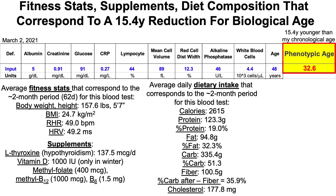The average daily dietary intake for the two-month period from my last blood test until this one: my average calorie intake was 2,615. Protein intake was 123 grams per day, which is 19% of total calorie intake. Fat intake was 95 grams per day, corresponding to 32% of total calories. Carbs were 335 grams, resulting in 51% of total calories from carbohydrates. I eat about 100.5 grams of fiber per day — subtracting fiber from carbs results in a net carb intake of about 235 grams, or about 36% of calories. My average daily dietary cholesterol intake is about 178 milligrams per day.